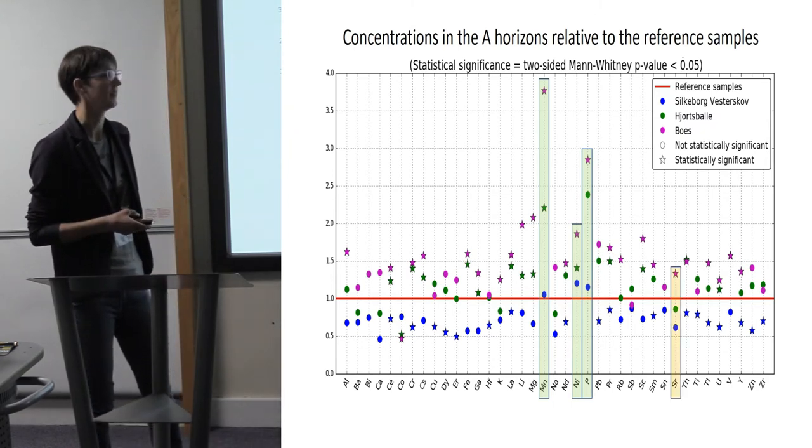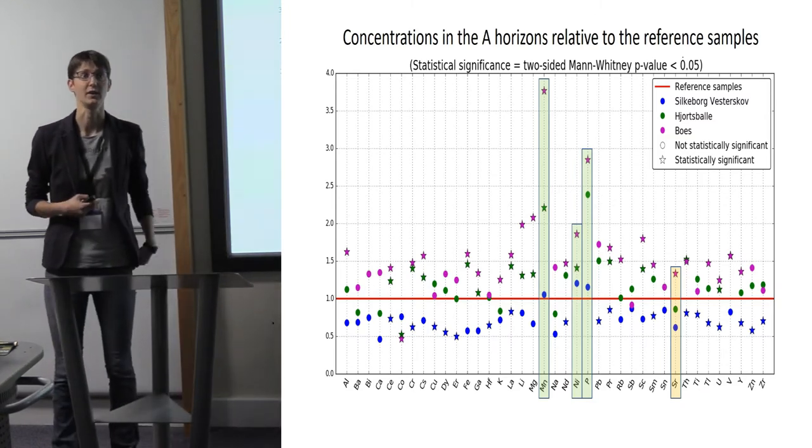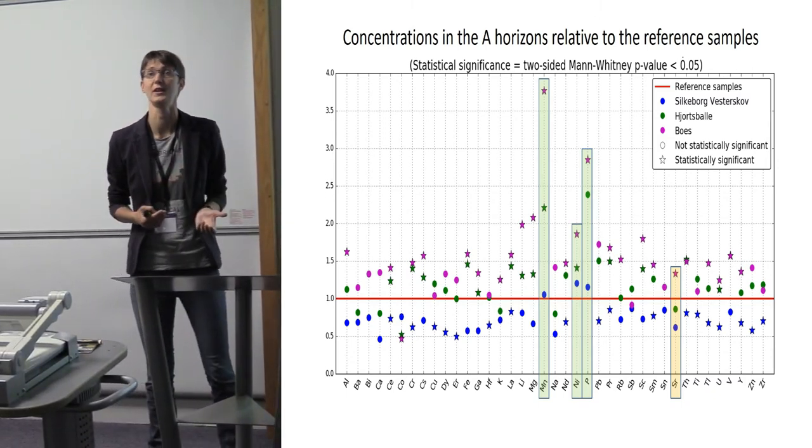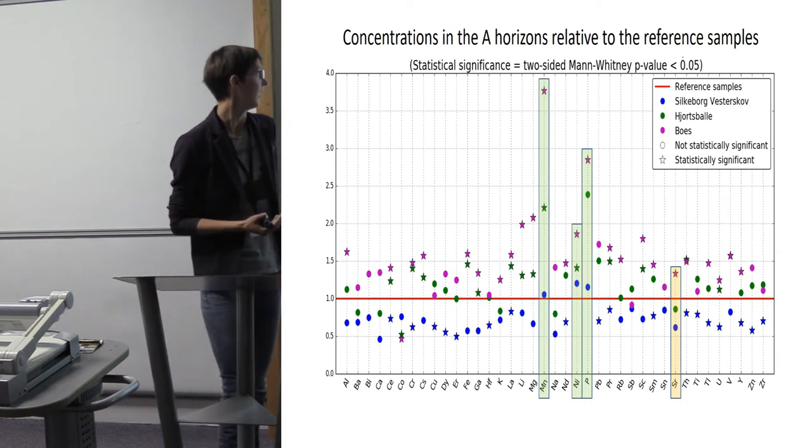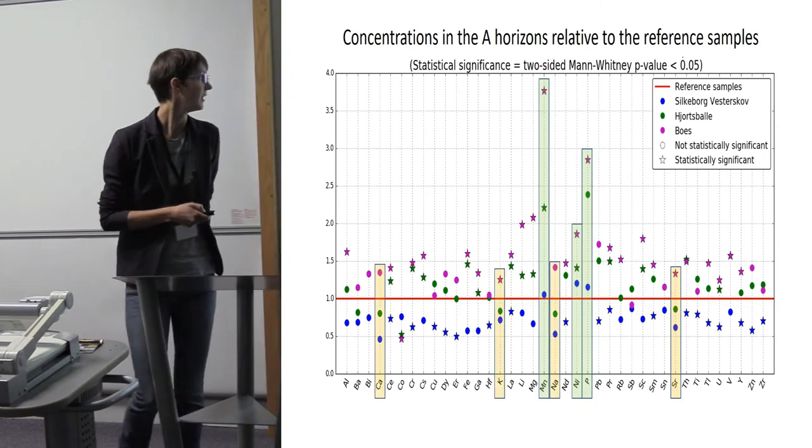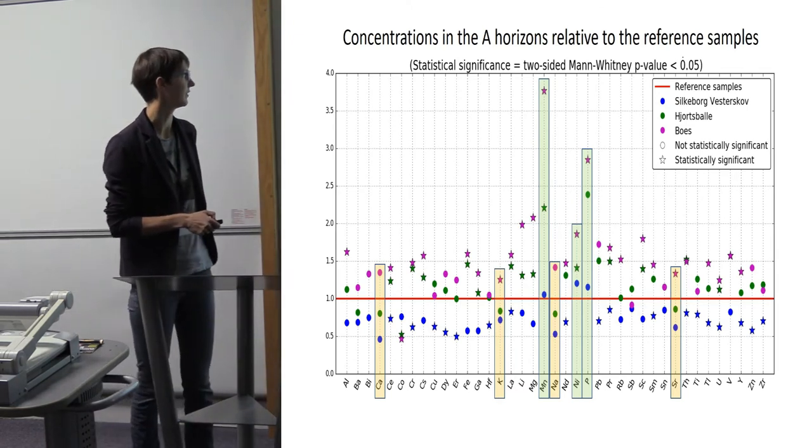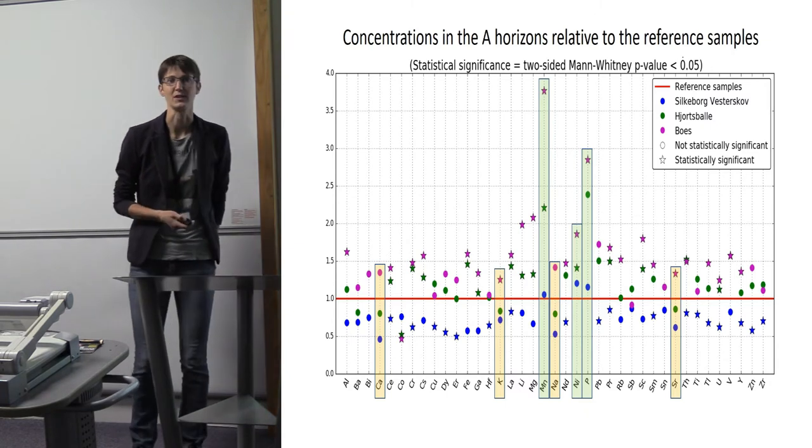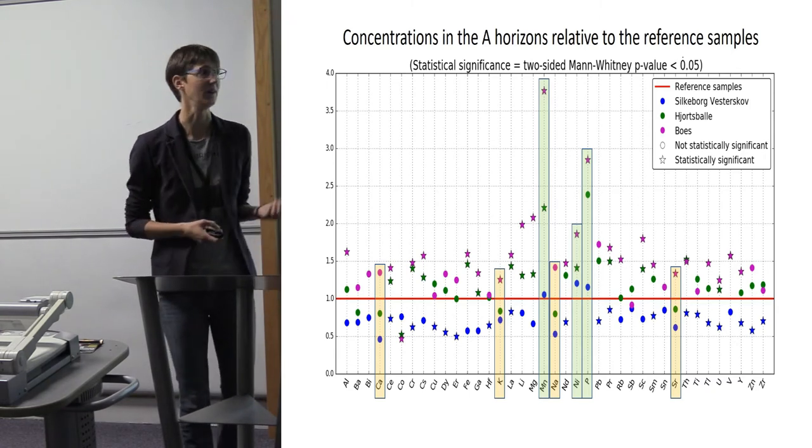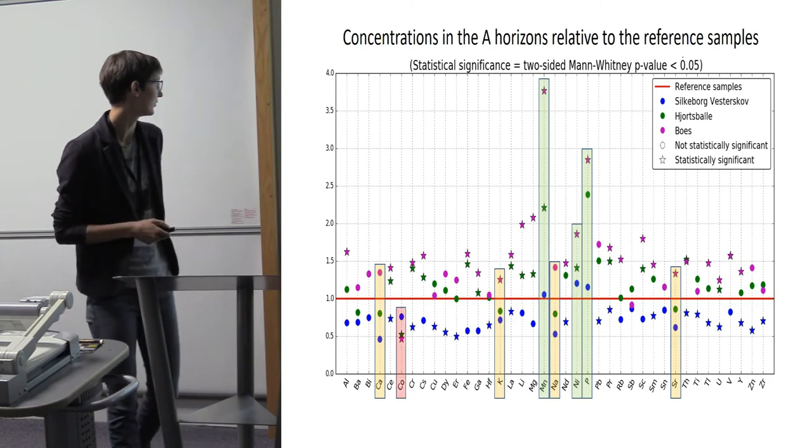At Østerlemhede, strontium turned out to be a really good marker for the addition of household waste onto the fields from bones. But when we look at it here, as indicated by the principal component analysis, this follows the elements found in feldspar. So we can't really use it as evidence for the amendment of bone in this case.